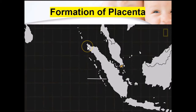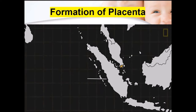The corpus luteum is the one that produces progesterone until the placenta is formed. Interestingly, dogs and wild animals actually eat the placenta after delivery so predators can't pick up the baby's scent. Human beings don't do that, but some mothers have the option of freezing the umbilical cord blood because it contains a lot of stem cells, which can be used if the baby develops a degenerative disease.